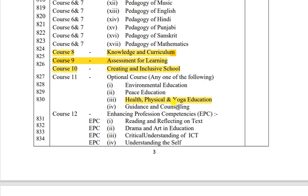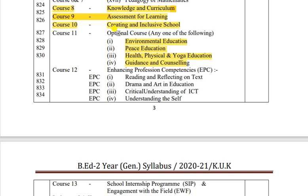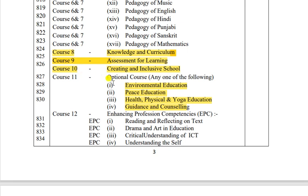Jyadatar students ke paas Health, Physical and Yoga Education hota hai. Second number pe Guidance and Counseling, then Environment Education aur Peace Education - yeh aapke 4 choices hain. College jo choice deta hai wahi leni padti hai, hardly aapko apni choice select karne ka option diya jaata hai, but aap college se kisi particular subject ke liye pooch sakte hain. Total 4 papers second year mein hote hain - first year mein zyada, second year mein kam.